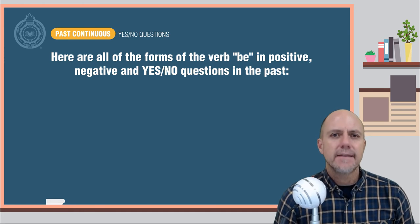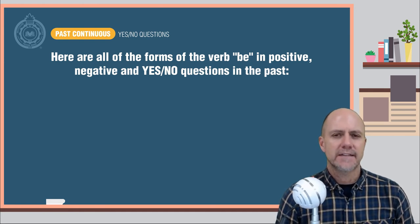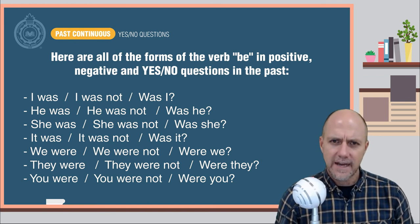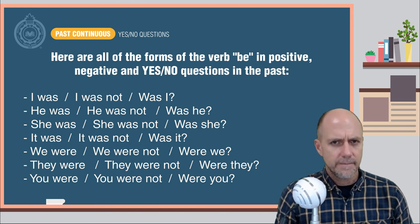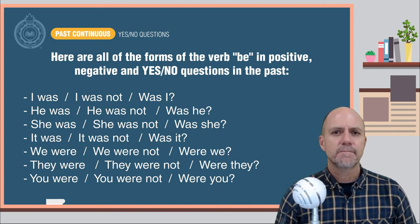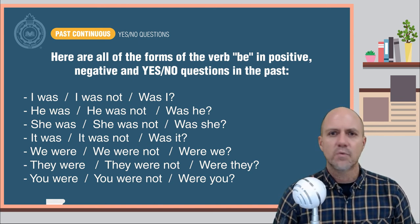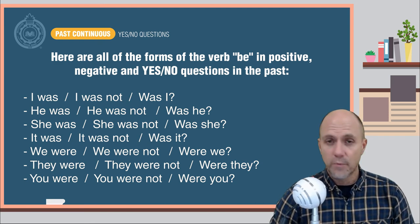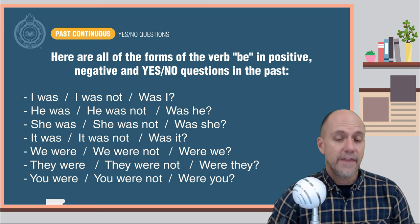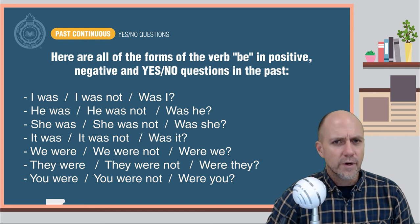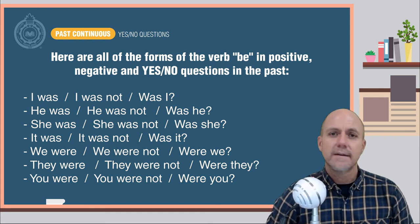Here are all of the forms of the verb to be in affirmative, negative, and yes-no questions in the past continuous. I was / I was not / Was I? He was / He was not / Was he? She was / She was not / Was she? It was / It was not / Was it? We were / We were not / Were we? They were / They were not / Were they? You were / You were not / Were you?